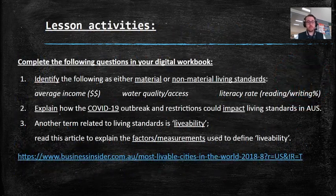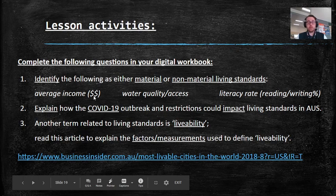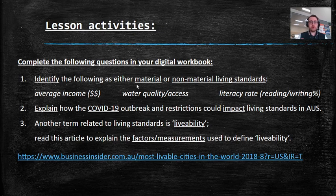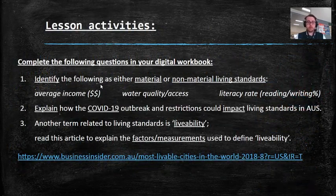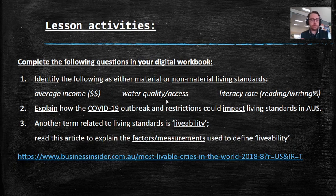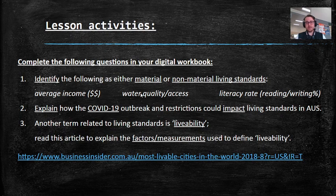For lesson activities, there are three questions to complete in your digital workbook. Question one: identify the following as either material or non-material living standards. Average income — is that material? Access to water and the quality of water — is that material or non-material? And literacy rate — the percentage of people in a city or country who can read and write, reflecting the education they've received. You just have to tick the boxes for those three.